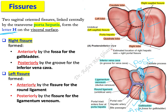Now, what about the left fissure? The left fissure is formed by two ligaments. Anteriorly, there is the round ligament, and posteriorly it is formed by another ligament called the ligamentum venosum — round ligament anteriorly and ligamentum venosum posteriorly.